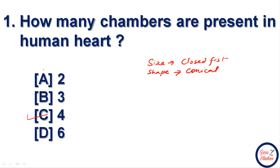Now, why does the heart need four chambers? We all know that our body has oxygenated blood and deoxygenated blood. To prevent the mixing of oxygenated and deoxygenated blood in the heart, there are four chambers, all separated by a muscular wall known as the septa.